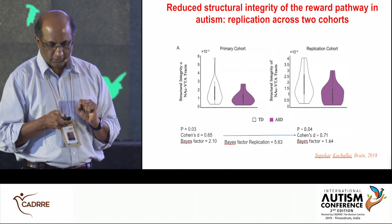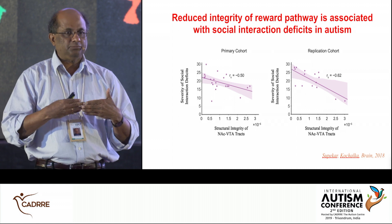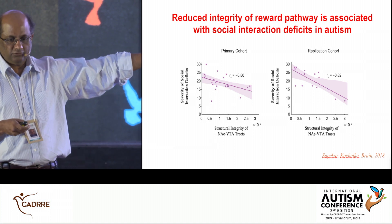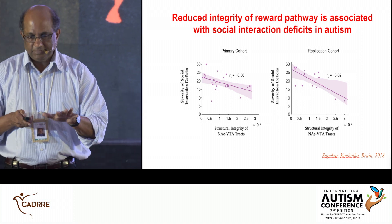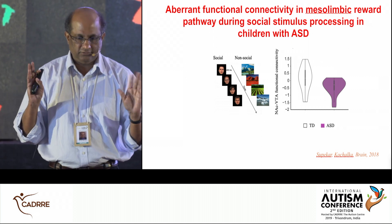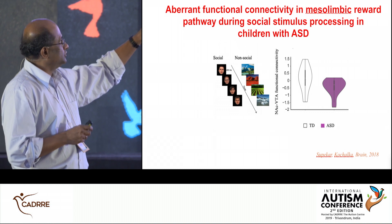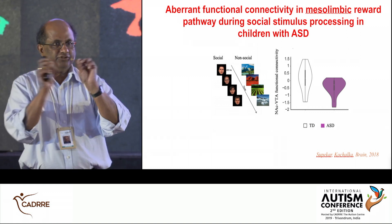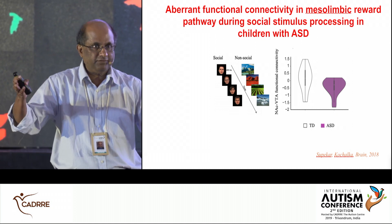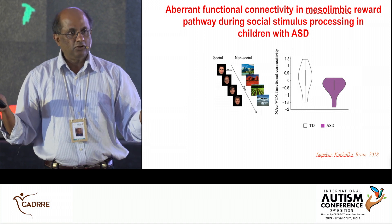This is a study we published last year. The strength of the connection on this track is actually weak — replicated in the second cohort. Critically, is there a relationship between the structural integrity of this pathway and clinical symptoms? It turns out the weaker the structural pathway, the more severe the social interaction deficits — also replicated in the second cohort. We then asked subjects to passively view social and non-social stimuli while lying in the scanner.